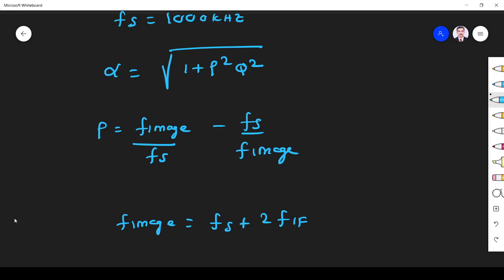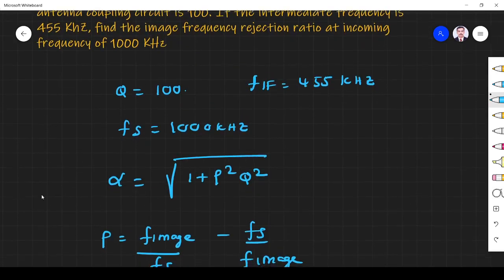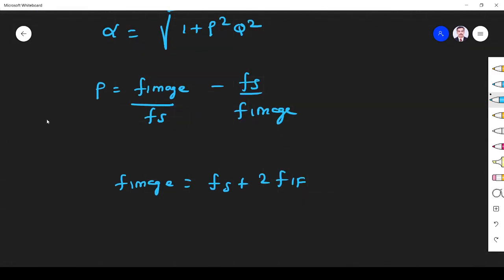f_s is 1000 plus f_IF 455, so this is 1910 kilohertz.